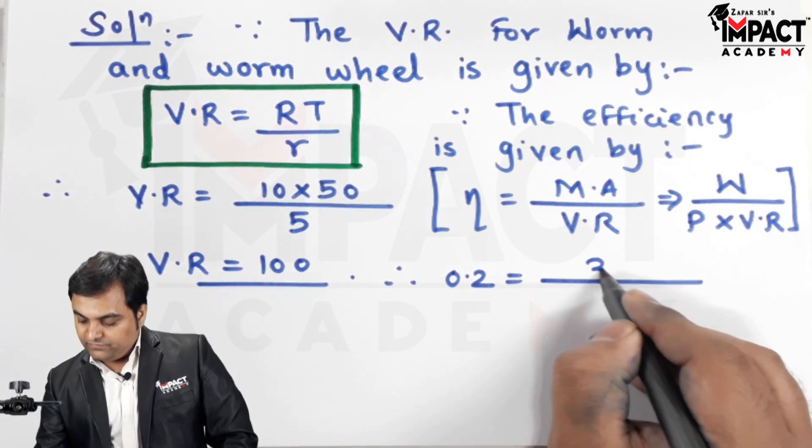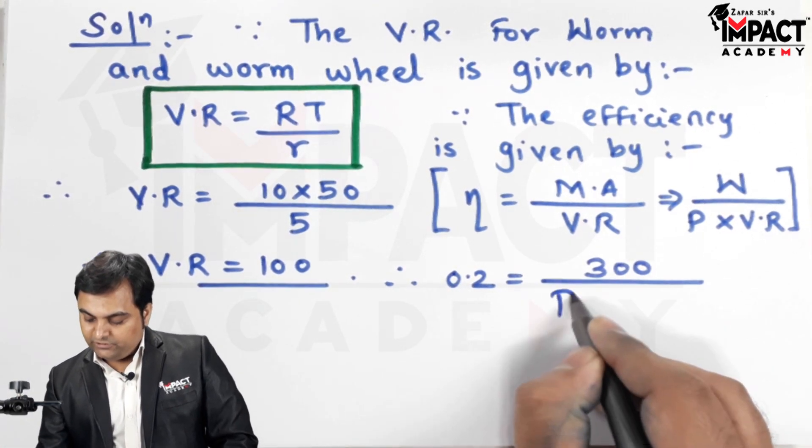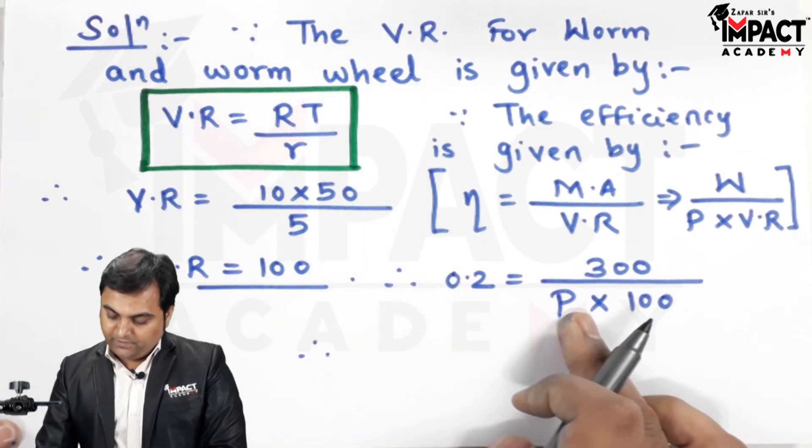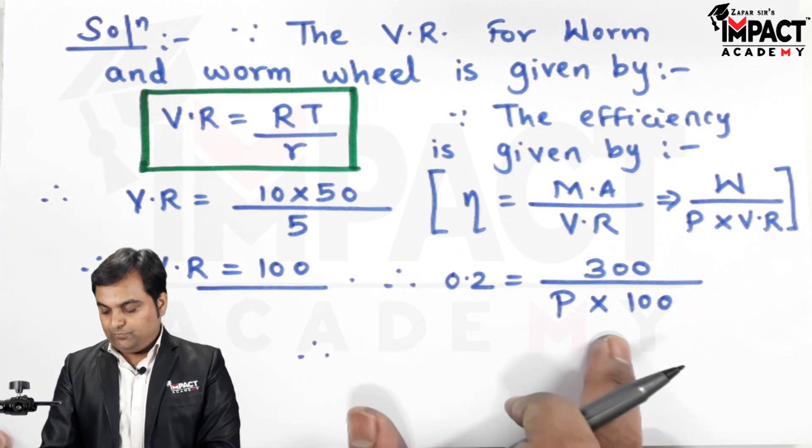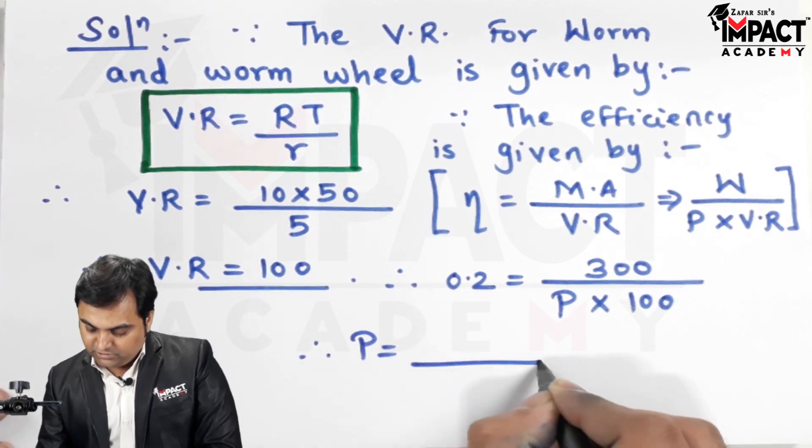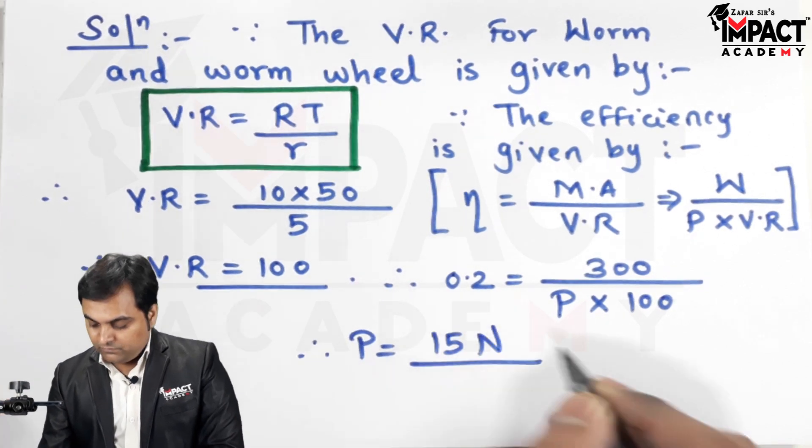Load W is 300, effort is what we have to find out, velocity ratio is 100. So therefore P would be shifted onto the other side, 0.2 would be here in the denominator, and the answer of effort comes out to be 15 Newton.